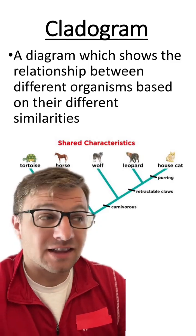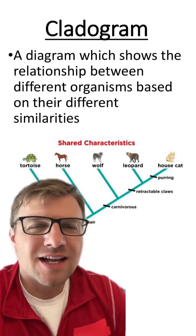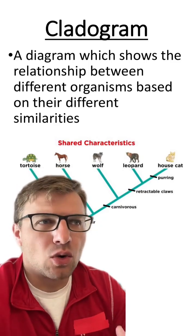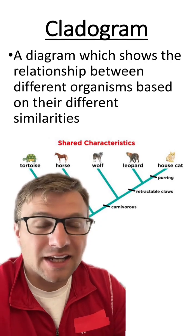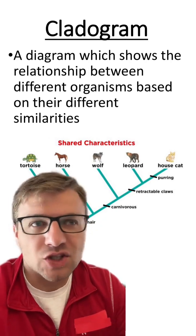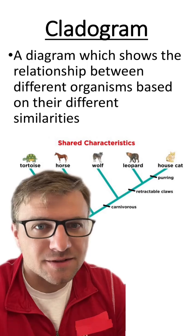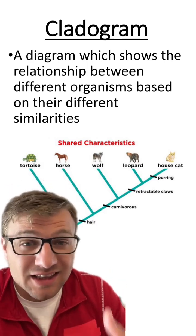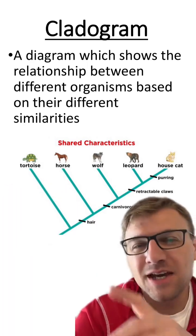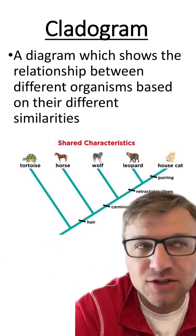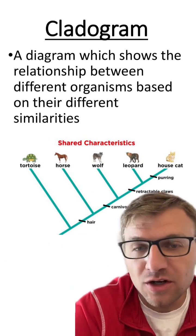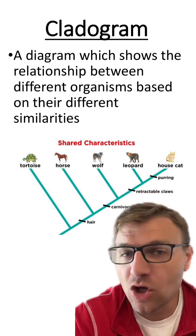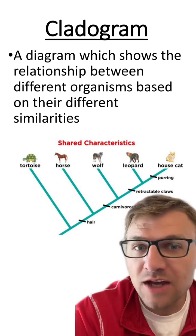Let's learn about the concept of a cladogram. Cladograms are diagrams that show evolutionary relatedness between species based on shared characteristics. This is an example of a cladogram because this diagram is showing what characteristics two species are going to share between each other, which helps us chart out evolution.